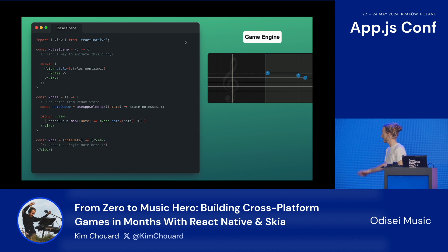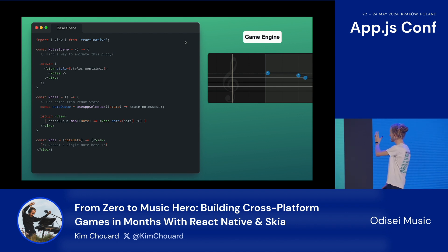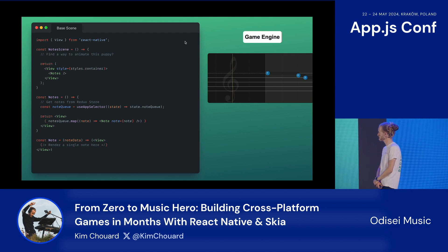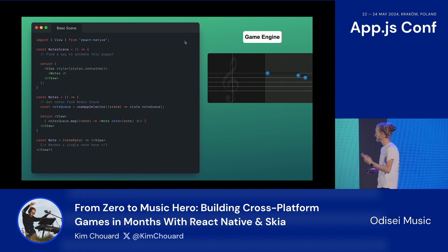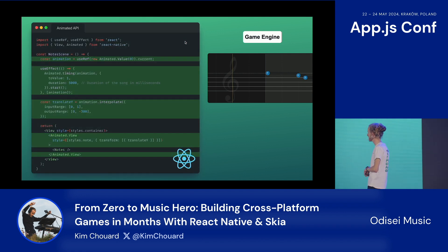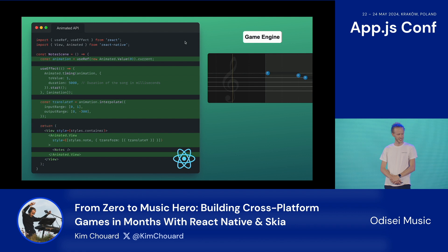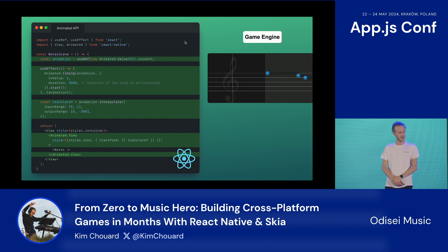So let's see how we can build this game engine. You see it on the right here. We're going to focus on the notes and the animation. Here we have some basic React Native code with a note scene that fetches the notes from a Redux store and maps on them to display the notes. Let's first look at how we can animate the scene. A basic approach would be to use React Native's built-in animation so we don't have to install another library and it doesn't increase our bundle size. You just use a reference, create your animation style, and pass it as a style.